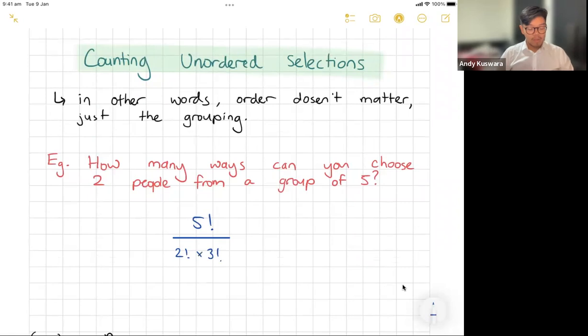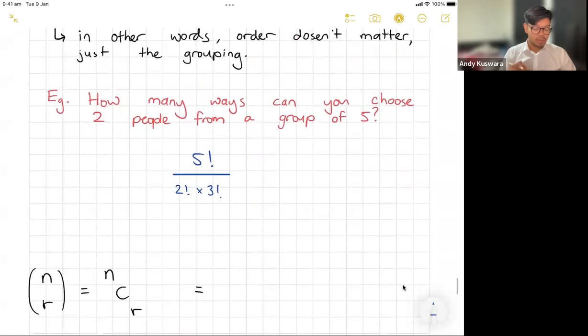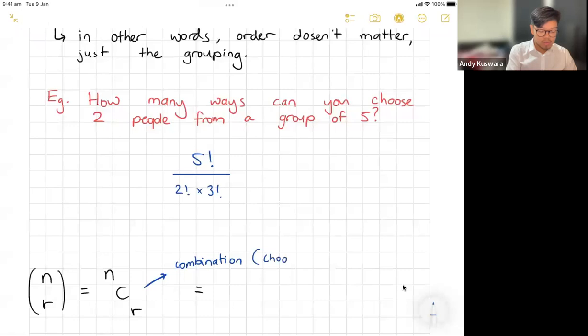I'll explain how we get there because we're kind of accounting for the different ways that we can pick those two people. We're going to use this thing called nCr. C stands for combination, or sometimes people call it choose. n is the total number to choose from, and r is the number that you choose.